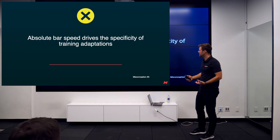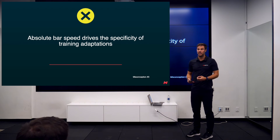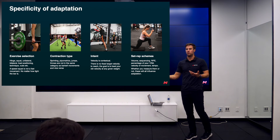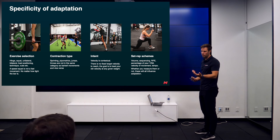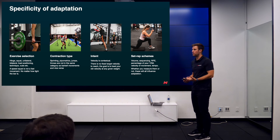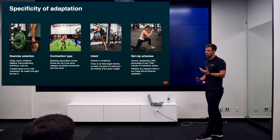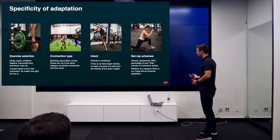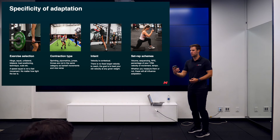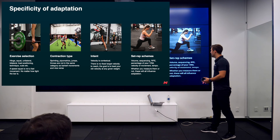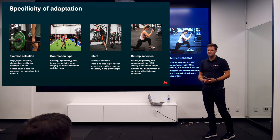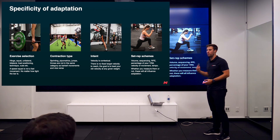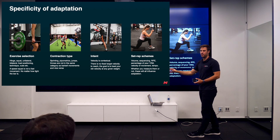Absolute bar speed drives the specificity of training adaptations to a degree — a power clean is faster than a squat, they'll have different adaptations. But the bigger variable is the clean versus the squat, not the actual speed of the bar. Exercise selection is really important: unilateral versus bilateral, where the load is, technique, how you cue it. External versus internal cues. Contraction type — plyometrics and throws are fundamentally faster than barbell lifts, so if you want lots of speed work, get people jumping, throwing, and sprinting. Bar speed helps us make good decisions, but all these variables matter more than bar speed alone.